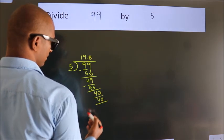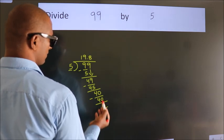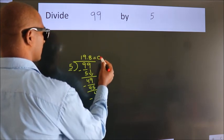5 eights is 40. Now we subtract. We get 0. We got remainder 0. So this is our quotient.